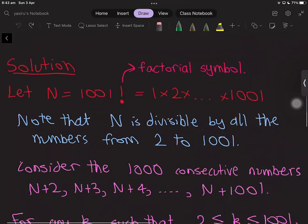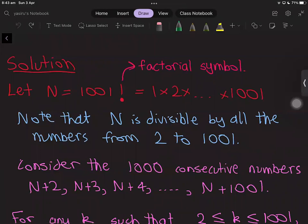Let N = 1001 factorial. This is equal to the product of all the numbers from 1 to 1001, so that's 1 × 2 × 3 × ... × 1001.